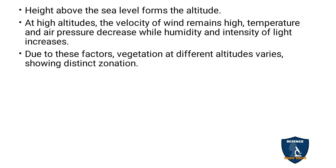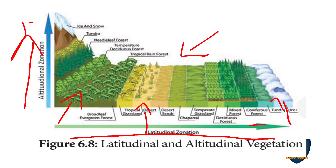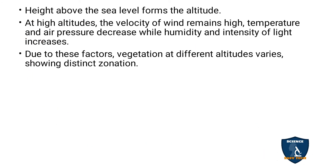The height above the sea level forms the altitude. From sea level to the top of the mountain is called altitude. At high altitudes, the velocity of wind remains high, while temperature and air pressure decrease, and humidity and intensity of light increase. Due to these factors, vegetation at different altitudes varies, showing distinct zonation.